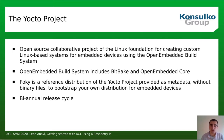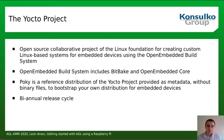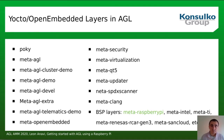To build this whole distribution from scratch, AGL relies on the Yocto Project — an open source collaborative project of the Linux Foundation for creating custom Linux-based systems for embedded devices using the OpenEmbedded build system, which provides BitBake and OpenEmbedded Core. Poky is the reference distribution provided by the Yocto Project; it comes with metadata but no binary files. The idea is to bootstrap your own distribution for embedded devices by building on top of Poky. The Yocto Project has an annual release cycle, just like AGL.